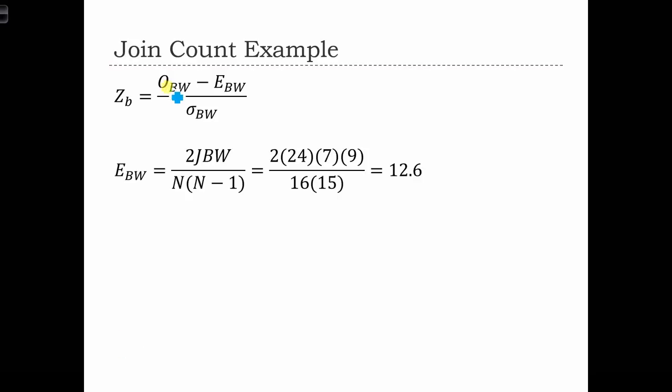Remember that the z-score is OBW minus EBW on top. And EBW is 2 times the number of joins. So 2... We had 24 total joins, 7 black cells, 9 white cells, 16 cells in total, and n minus 1 is 15.